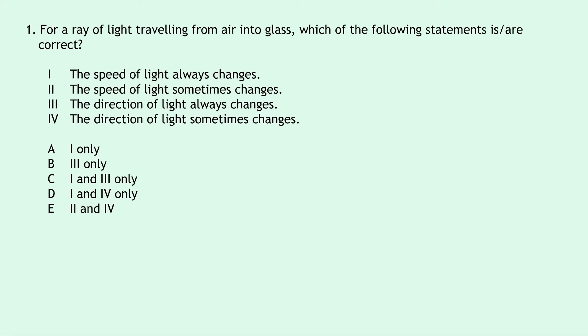The first example we'll cover looks at the definition of refraction. It's a multiple choice question and it says: for a ray of light travelling from air into glass, which of the following statements is or are correct? Statement 1: the speed of light always changes. Statement 2: the speed of light sometimes changes. Statement 3: the direction of light always changes. Statement 4: the direction of light sometimes changes. The best way to tackle these questions is to go through each statement in turn and decide whether you think it's true or false.